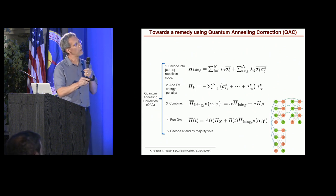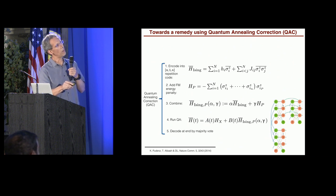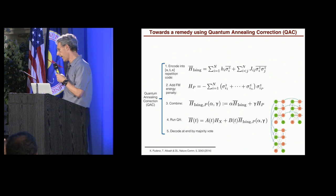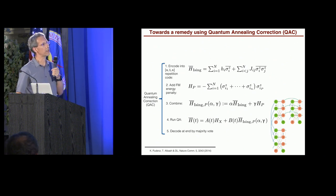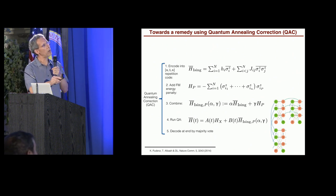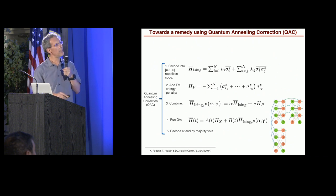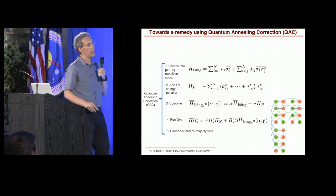So then with this encoded Ising Hamiltonian, we run the quantum annealing experiment. We cannot encode the transverse field Hamiltonian, HX, which is why I call this a poor man's version of doing quantum error correction. Ideally, we'd like to encode this as well, but we can't, at least not on the current generation of the D-Wave machines. So we run quantum annealing with this construction, with this encoded Hamiltonian. And then at the end, we decode every one of these logical qubits by doing a majority vote on the three data qubits here. All right. So that's quantum annealing correction.